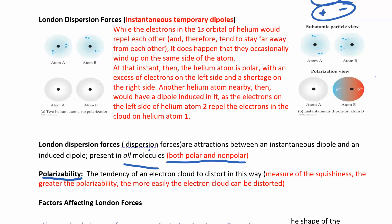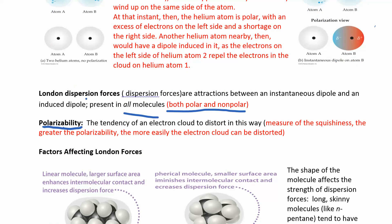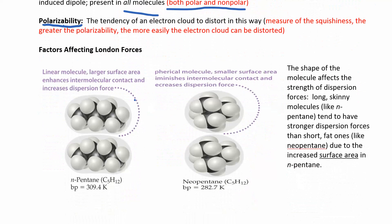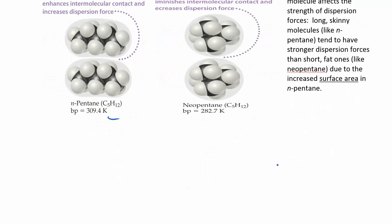London forces are these instantaneous dipole moments — you can induce a dipole moment. For nonpolar molecules, that's the only force they have, but every molecule has London dispersion forces. There are factors that can affect London forces, like shape. Looking at these two molecules — both are C5H12 — they have a different arrangement. One is just five carbons in a row, and this one has three carbons in a row with one on top and one on the bottom.